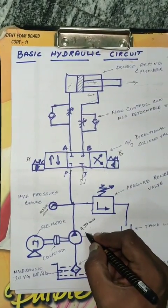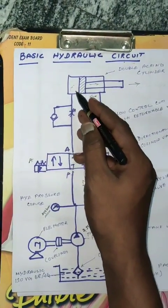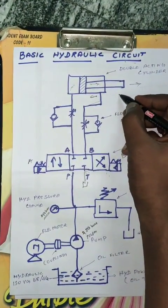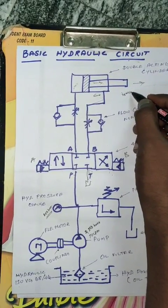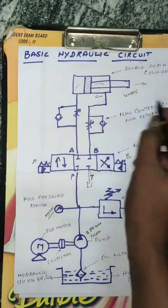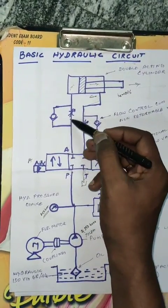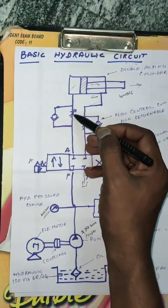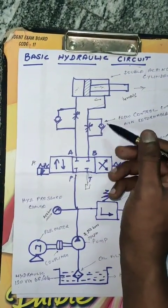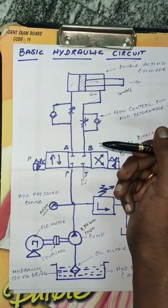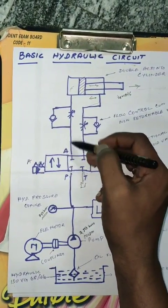The pump is 70 LPM. This is LPM — some speed, about 25 mm per second in the range speed. Now the speed is controlled. Step up to flow control — method of flow control. The flow control is meter-out, meter-in flow control.